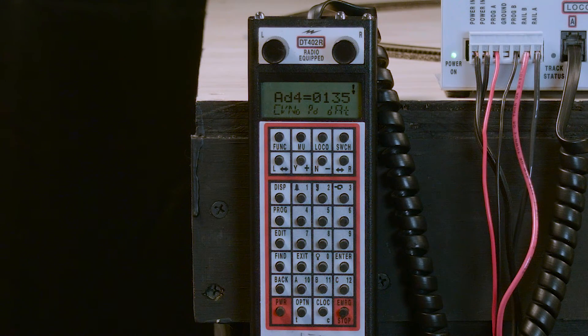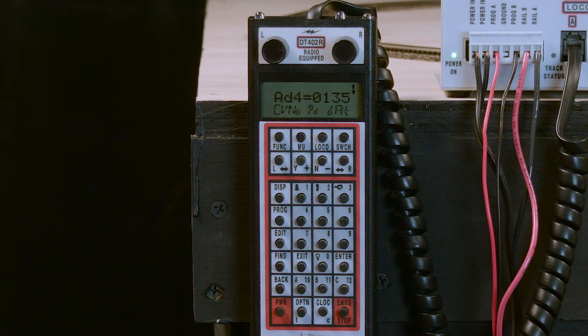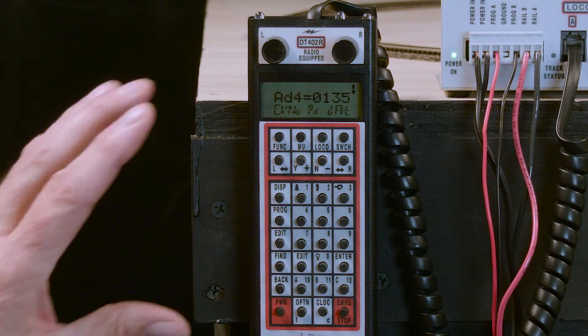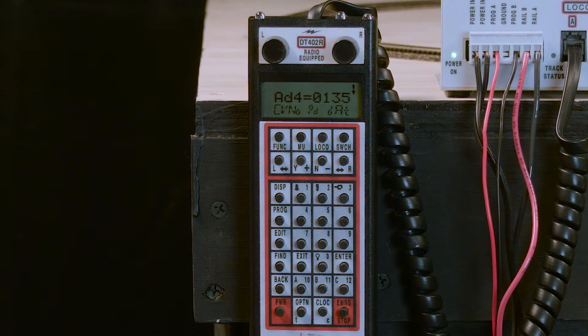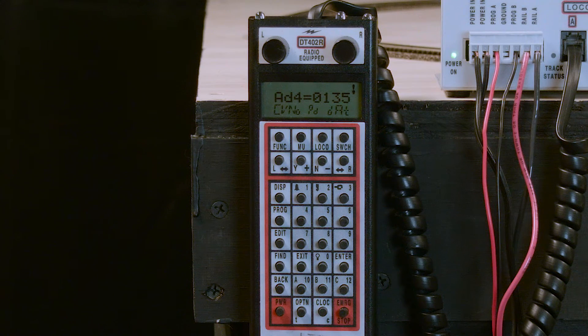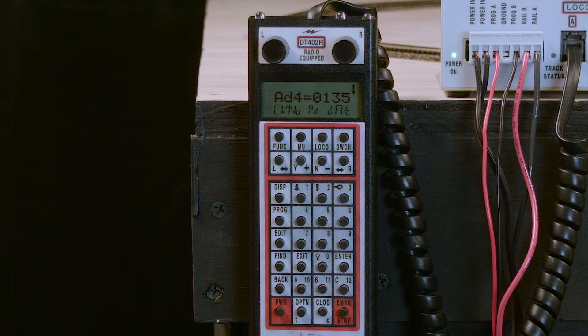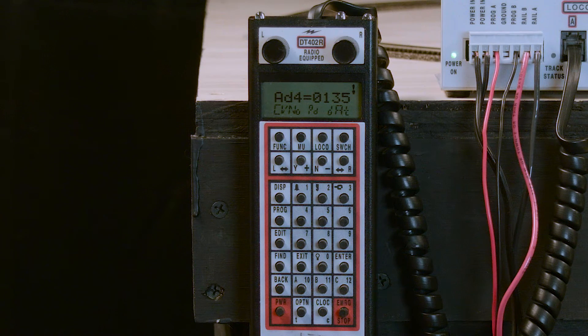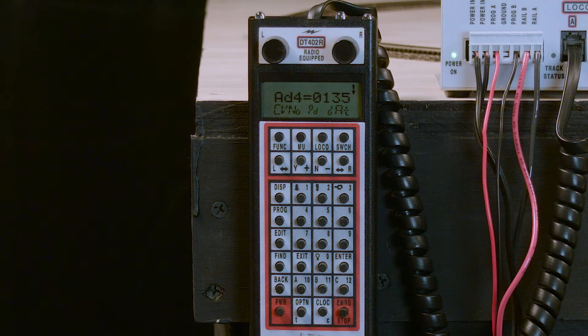Notice I had to press them almost together. We now have AD4 equals 135 and that locomotive has now been re-addressed to 135 and it should run on 135.